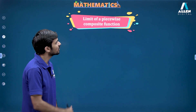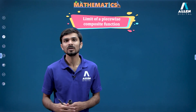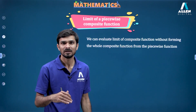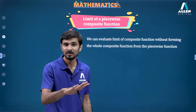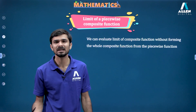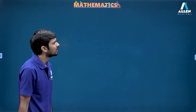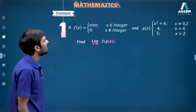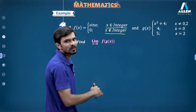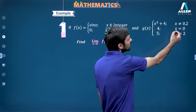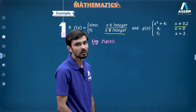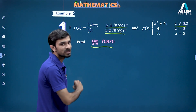Let's see how to find limits of a piecewise composite function with an example. I have f(x) defined as sin x for all integers, and 0 for non-integers. And g(x) = x² + 4 for x ≠ 0 and x ≠ 2; g(0) = 4; g(2) = 5. I need to find limit x→0 of f(g(x)).